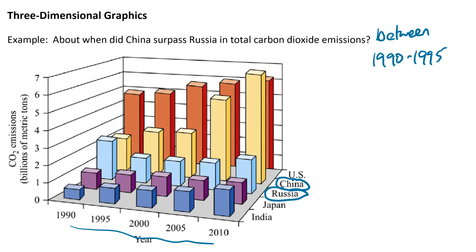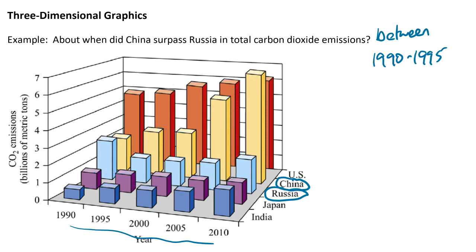So the crossover happened somewhere between 1990 and 1995. The graph makes it easy to see trends: the US steadily increased, China really increased, Russia went down but started to go back up, Japan stayed fairly constant, and India was barely increasing. It gives a general sense of the data, but it's hard to tell precise values from this graph.